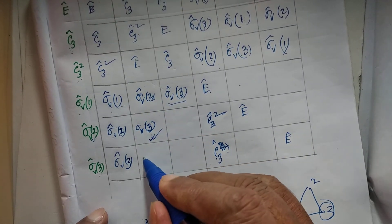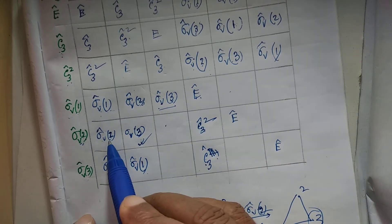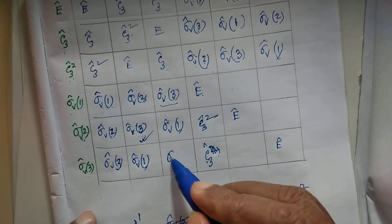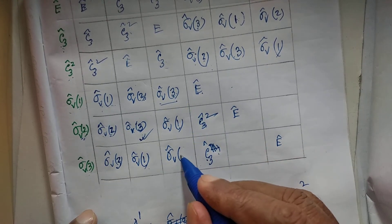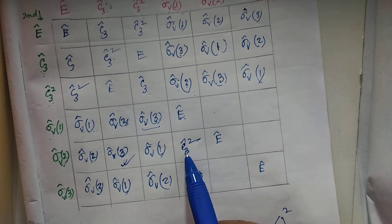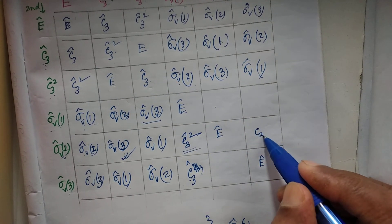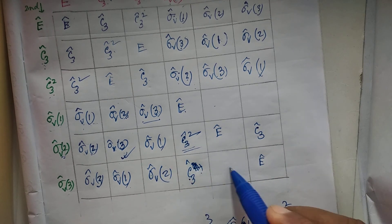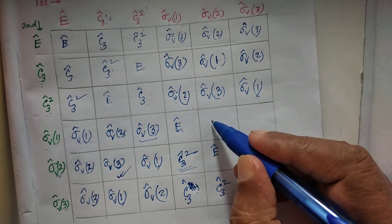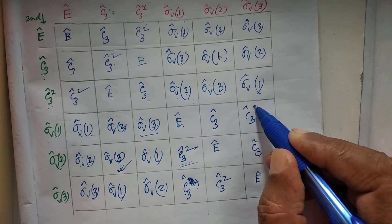By the rearrangement theorem, we should have σV1, σV2, and σV3 distributed correctly in the remaining rows. For the rotation entries: where we have σV3 and E already found, the remaining entries must be C3 and C3². Since C3² is here, this must be C3; since C3 is here, the remaining entry must be C3². Working through all remaining cells this way, we fill in the final rotation entries.